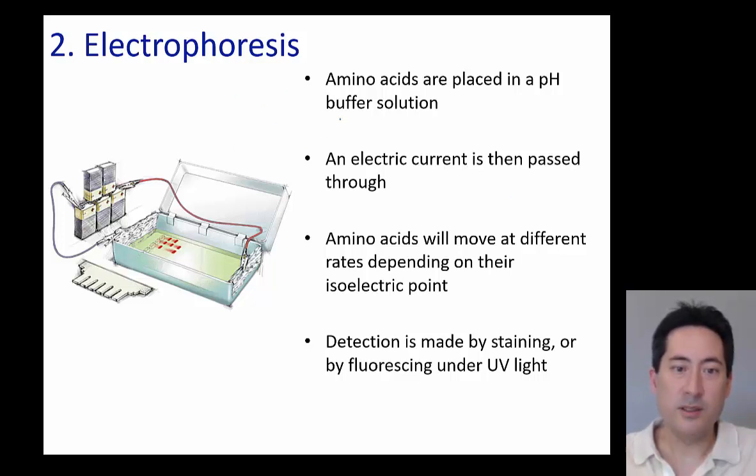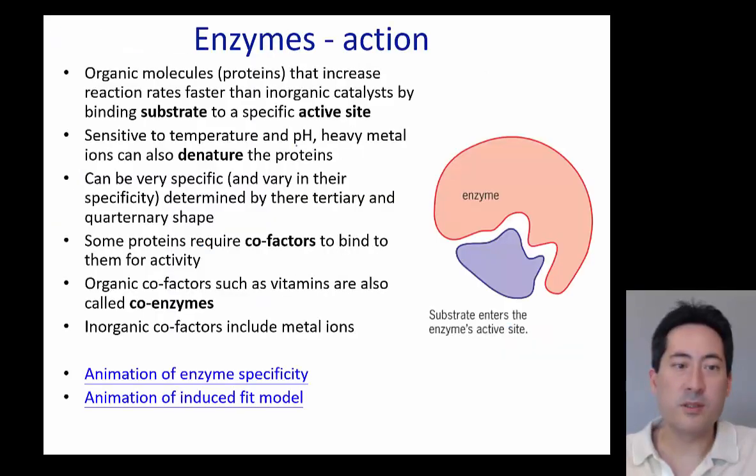Okay, so the second thing you can do besides doing the chromatography is the electrophoresis which we just talked about before. And apart from staining by ninhydrin, you can use UV light, which is I think what I did at uni many decades ago.